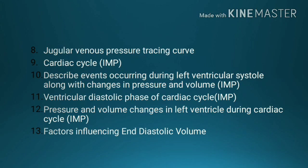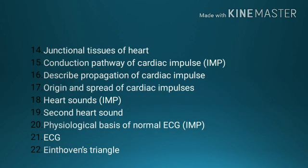Number 11, ventricular diastolic phase of cardiac cycle. Number 12, pressure and volume changes in the left ventricle during cardiac cycle. Number 13, factors influencing end-diastolic volume. Number 14, junctional tissues of heart. Number 15, conduction pathway of cardiac impulse. Number 16, describe propagation of cardiac impulse. Number 17, origin and spread of cardiac impulses.